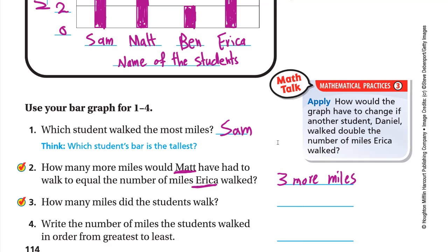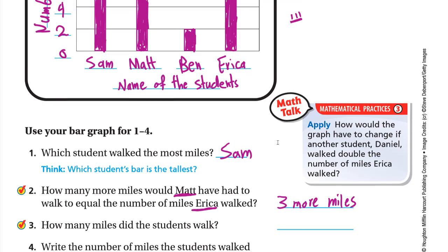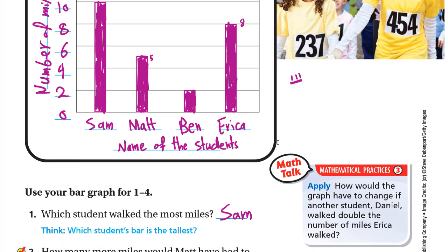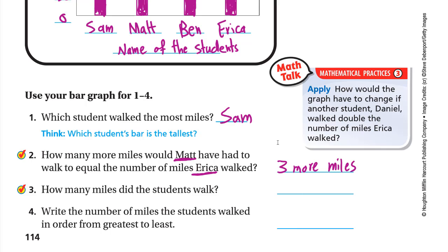Question three: how many miles did the students walk in total? Sam is 10, Matt is 5, Ben is 2, and Erica is 8. So 10 plus 5 plus 2 plus 8: 10 plus 5 is 15, plus 2 is 17, plus 8 is 25. The students walked a total of 25 miles.